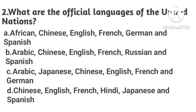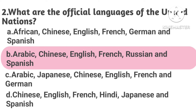What are the official languages of the United Nations? Option A: African, Chinese, English, French, German and Spanish. Option B: Arabic, Chinese, English, French, Russian and Spanish. Option C: Arabic, Japanese, Chinese, English, French and German. Option D: Chinese, English, French, Hindi, Japanese and Spanish. The answer is Option B.